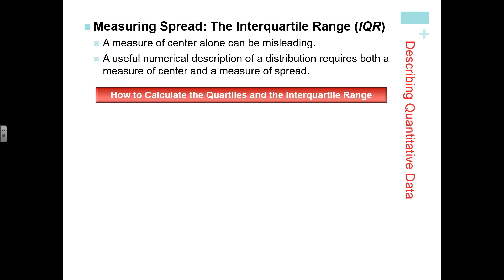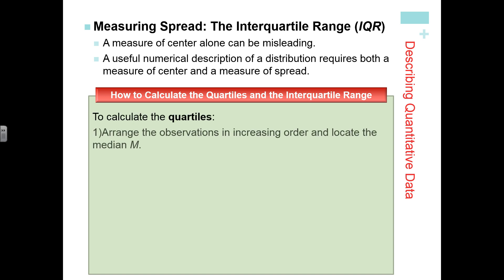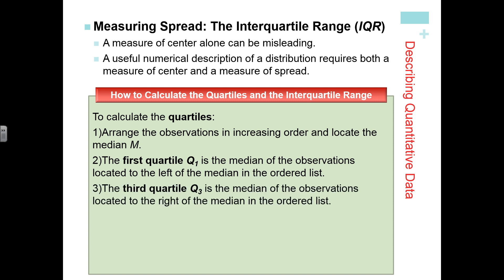The next thing we want to look at is measuring spread. The first way is using our interquartile range. To find your IQR, you first have to find your quartiles. Arrange your data from smallest to largest and find the median. For Q1, find the middle of the lower half — the stuff to the left of the median. For Q3, find the middle of the upper half. Then calculate the IQR by doing Q3 minus Q1.